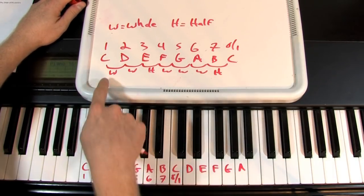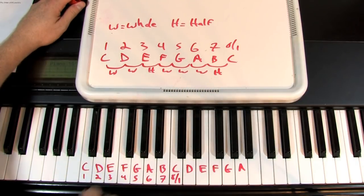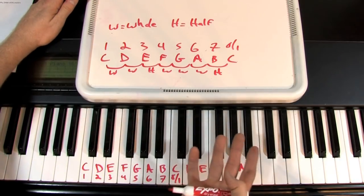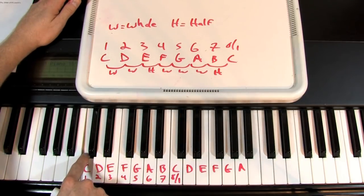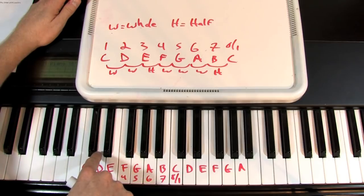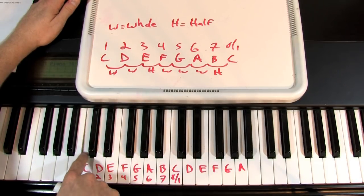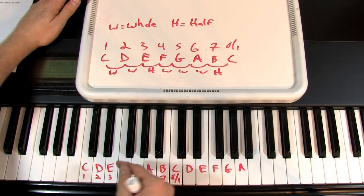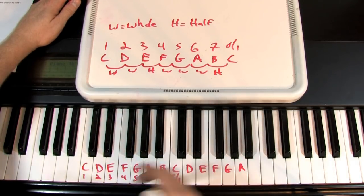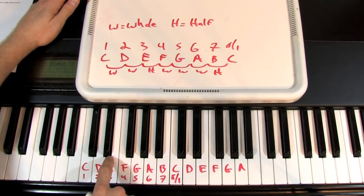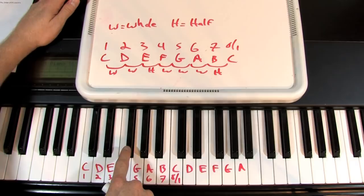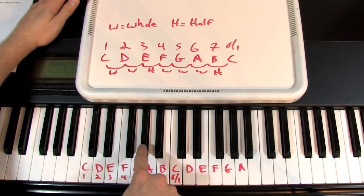This formula of whole, whole, half, whole, whole, whole, half — we can apply it to C. A whole step is going up two half steps, so two halves make a whole. C to D is a whole step. A whole step up from D is E. What's a whole step up from E? Many beginners say F, but no — a whole step is two half steps, so it's F sharp. From F sharp, a whole step up is G sharp. From G sharp is A sharp. A whole step up from A sharp or B flat is C.